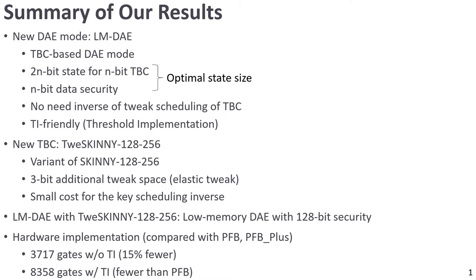Then we design a new TBC called TWISKINNY. TWISKINNY is a variant of SKINNY where a 3-bit tweak space is added in order to meet the LMDAE structure. TWISKINNY is designed to minimize the implementation cost of the key scheduling inverse. Combining LMDAE with TWISKINNY, we obtain a low-memory DAE with 128-bit security. We give a hardware implementation of our DAE and compare it with state-of-the-art TBC-based and nonce-based authenticated encryptions, PFB and PFB+. The memory sizes of these schemes are the same as our DAE, but since the TWISKINNY inverse cost is small, the hardware size of our DAE is fewer than those existing schemes. And for threshold implementation, the hardware size of our scheme is fewer than PFB.